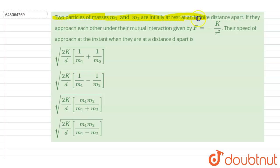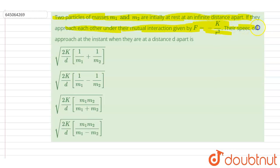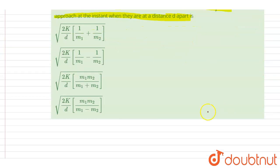Hello everyone. Two particles of masses m1 and m2 are initially at rest at infinite distance apart. If they approach each other under mutual interaction, the force F is given as minus k by r square. We need to find the speed of approach at the instant when they are at distance d apart.